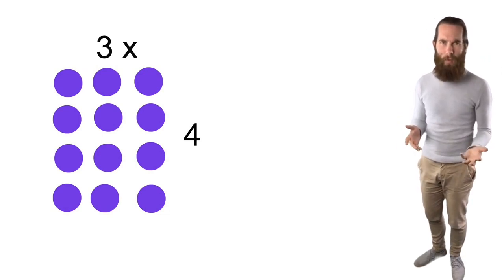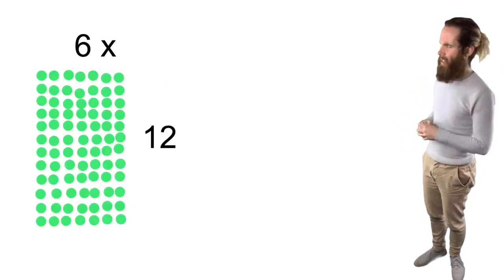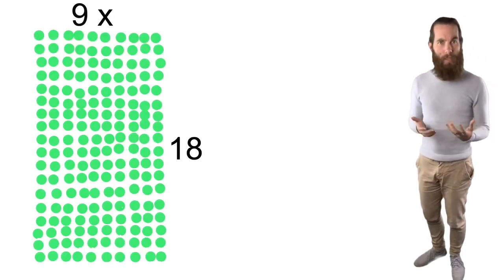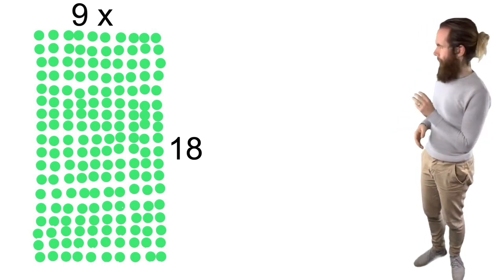But what happens when we have a larger one like this? Or an even larger one again? Well I suppose I could count up every single one of the dots but it's not a very efficient strategy and we're mathematicians, we want to be as efficient as possible. So what can we do about this?